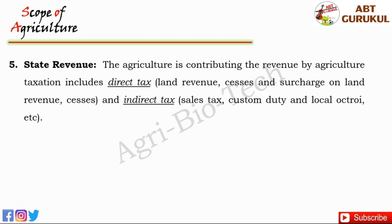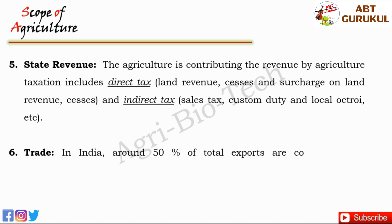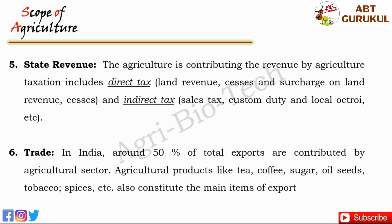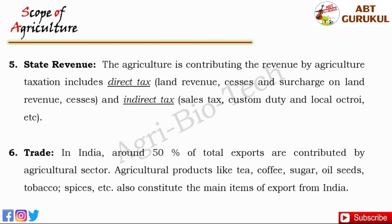The last scope is trade. Agriculture plays an important role in foreign trade, attracting valuable foreign exchange. In India, around 50% of total exports are contributed by the agricultural sector. Agricultural products like tea, coffee, sugar, oilseeds, tobacco, and spices also constitute the main items of export from India.